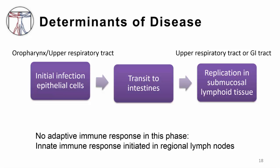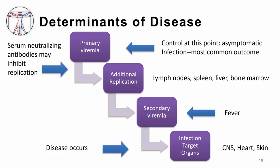Why do people get sick with enteroviruses? The first time a patient is exposed to a virus, there is no adaptive immune response early in infection, and it isn't until viral replication in the submucosal lymph nodes that the innate immune system is engaged. The only way to prevent infection at that point is if secretory IgA is present from immunization or prior infection. Control during primary viremia results in asymptomatic infection. Without control, additional replication occurs and the patient develops fever during secondary viremia. If replication is stopped there, only fever occurs; if not, additional spread leads to disease.